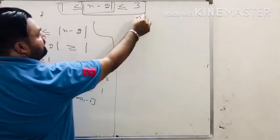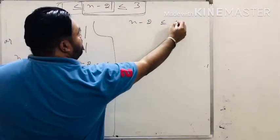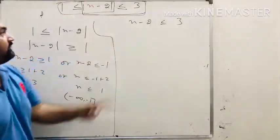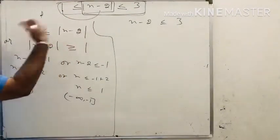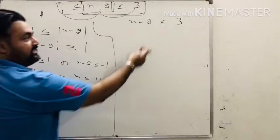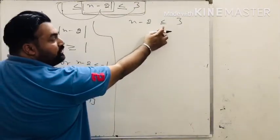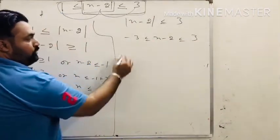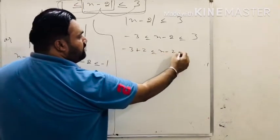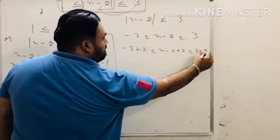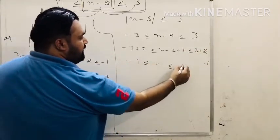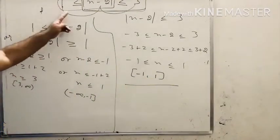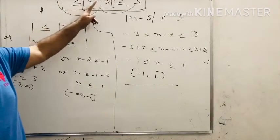The second part is x minus 2 less than or equals to 3. We split the whole expression into two parts: the first is the lower bound, the second is the upper bound. Whenever the sign is less than or equals to with a modulus, the magnitude becomes minus 3 to 3. We add 2 to all intervals, giving minus 1 to 5, so the answer for this part is minus 1 to 5.